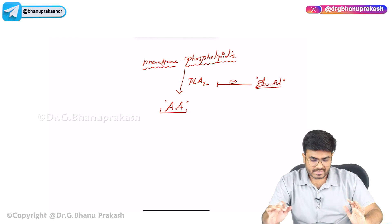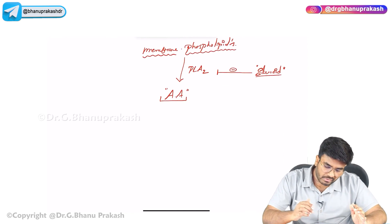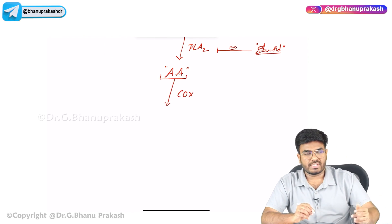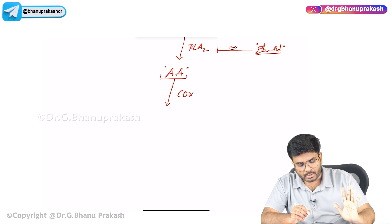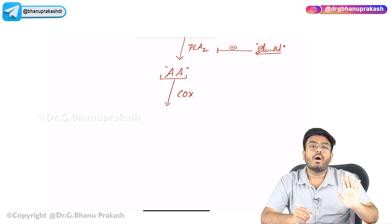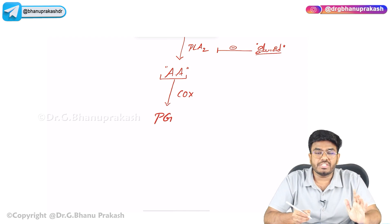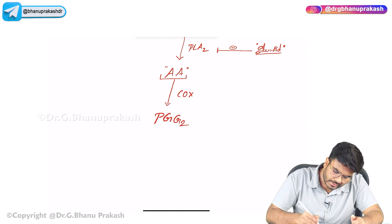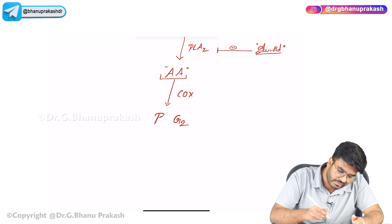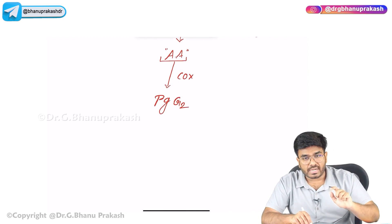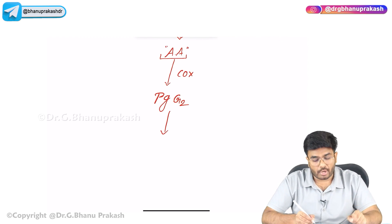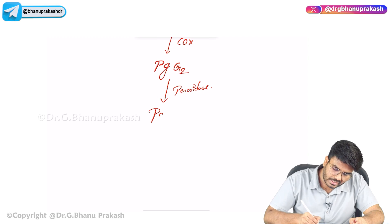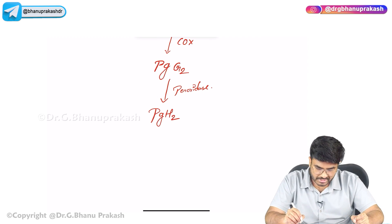Now, in the cyclooxygenase pathway, this arachidonic acid, when acted upon by cyclooxygenase (there are two types: COX-1 and COX-2), prostaglandin G2 is produced as a precursor. This prostaglandin G2, when acted upon by peroxidase, produces prostaglandin H2.